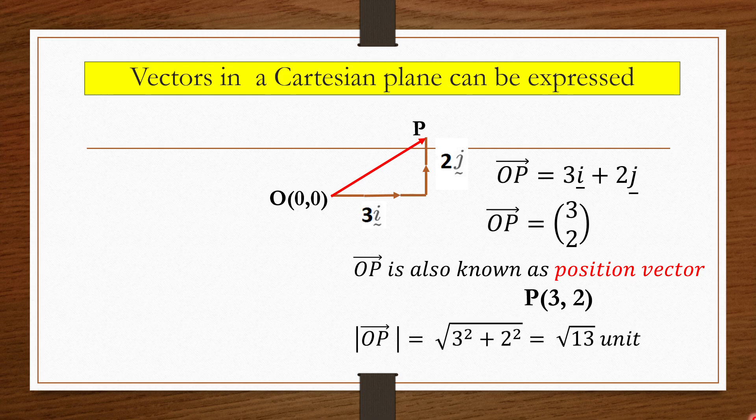To find the magnitude of vector OP, use the Pythagoras theorem: square root of 3 squared plus 2 squared, which equals square root of 13.